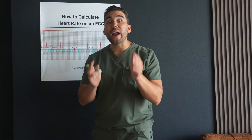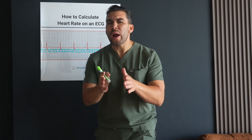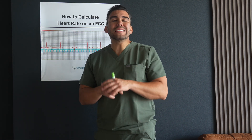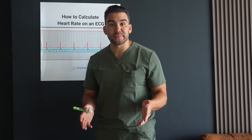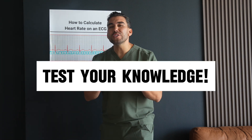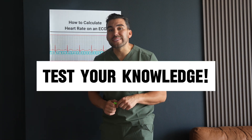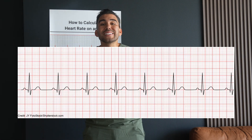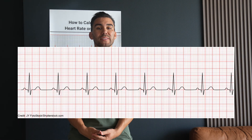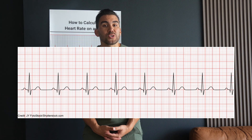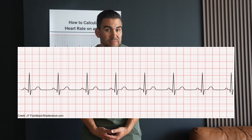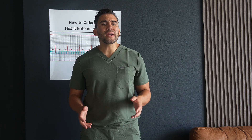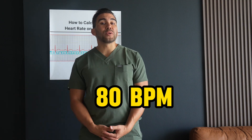Remember, practice makes perfect. Try these methods on different ECG strips to build your confidence. Before we wrap up, here's a quick quiz: use the six second method to calculate the heart rate on this strip — pause the video if you need more time. The correct answer is 80 beats per minute. Did you get it right?